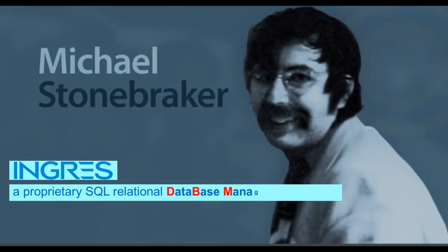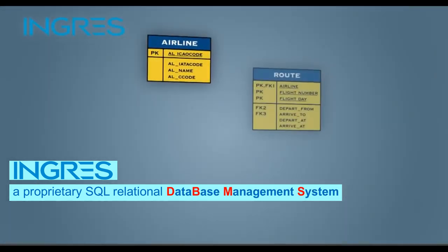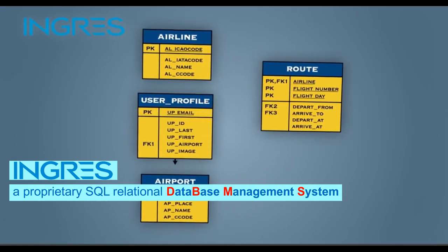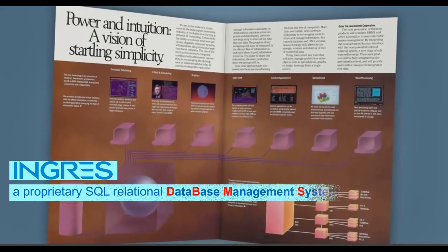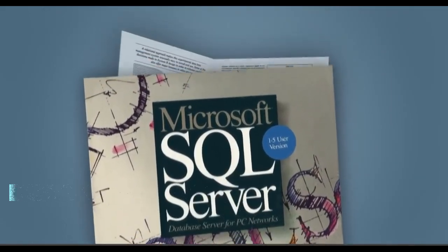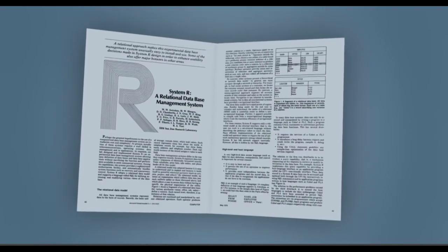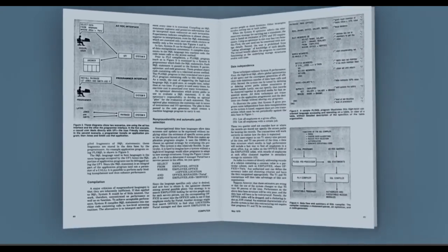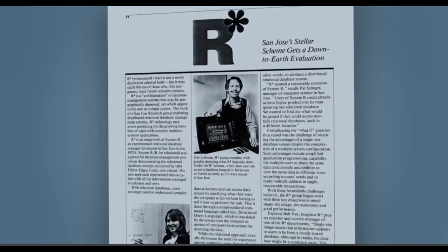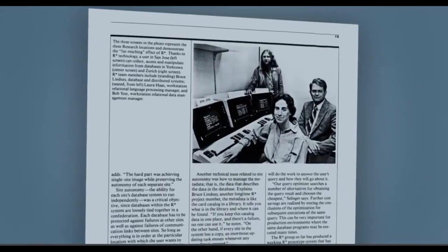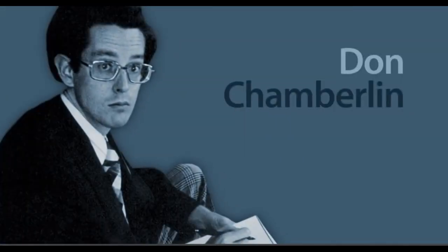In 1973, Michael Stonebreaker's team at UC Berkeley used Codd's ideas to create the Ingres relational database, making it freely available so that several companies used it as the basis for successful commercial products. It took until 1975 for IBM to produce an experimental relational database named System R, which used a Structured Query Language — SQL — developed by IBM's Donald Chamberlin and Raymond Boyce, to search and modify data.